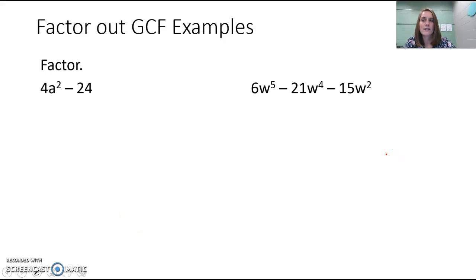Factor out the greatest common factor. Some examples here. So we are going to start with 4a squared minus 24.